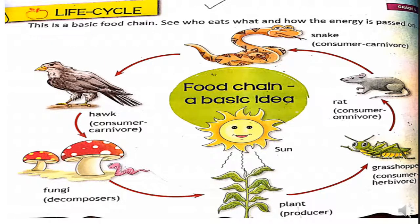There is a diagram of the food chain given. First of all, we should know how the food chain actually works. A food chain is the transfer of energy from one creature to another. Within a food chain, some living things create energy and some use the energy.